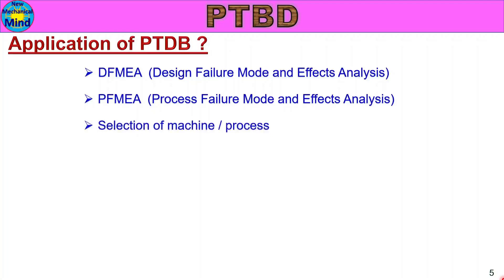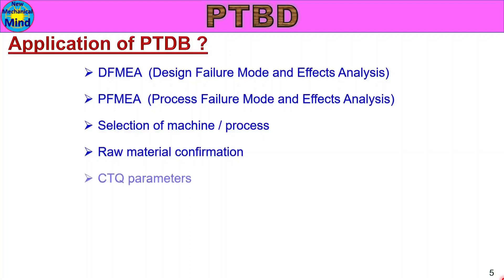The Past Trouble Database is also used for selection of the correct machine or process. It helps with raw material confirmation — to identify and avoid repeated failure materials. It also helps confirm CTQ parameters: CTQ is Critical to Quality, covering parameters such as tolerance and inspection.